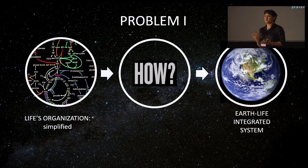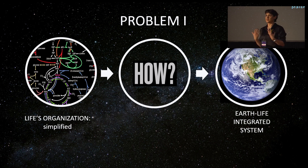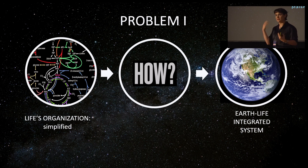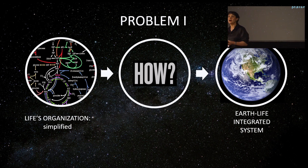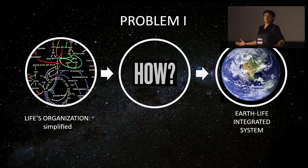The first problem is seemingly straightforward. Assuming a simplified view, going from an organized behavior that is sustaining itself and evolving — that's life as we think of it — to an integrated system that we think of as Earth and life. At this point, we are not thinking about origin of life. Hypothetically, the first cell evolved. We're thinking about what happened since the emergence of the first cell to basically the rest.